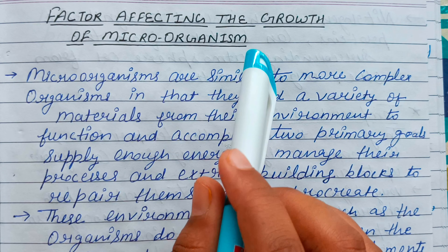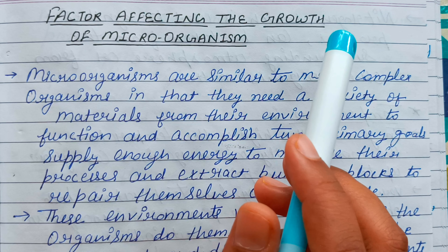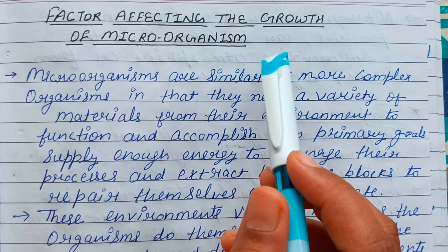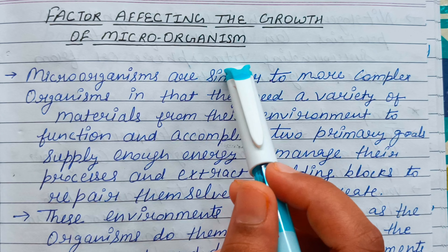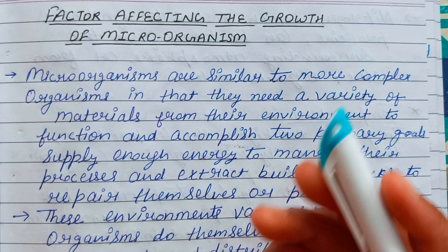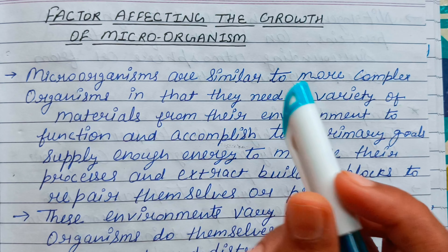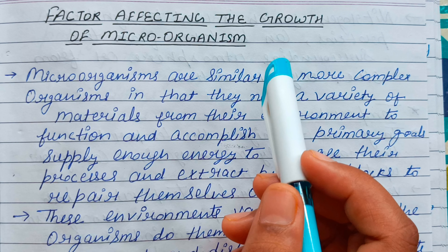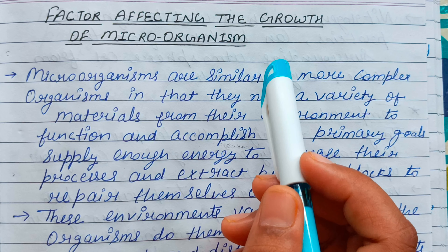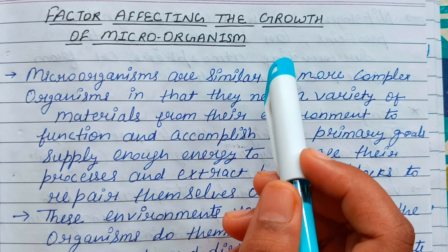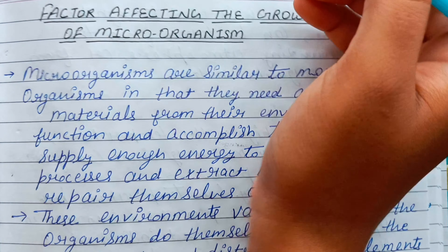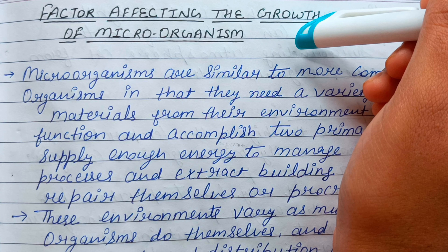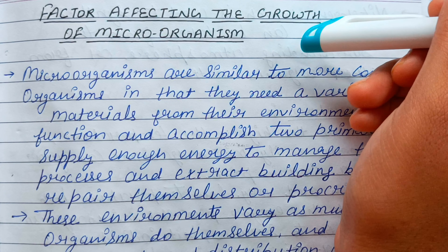So, this covers factors affecting the growth of microorganisms. These factors — nutrients, temperature, pH level, moisture, and elements present — determine the environment microorganisms need to grow. If the environment is preferable and useful, the microorganisms will thrive. They grow at particular temperatures and pH levels and also need a moist environment. Thank you so much, see you in the next video.